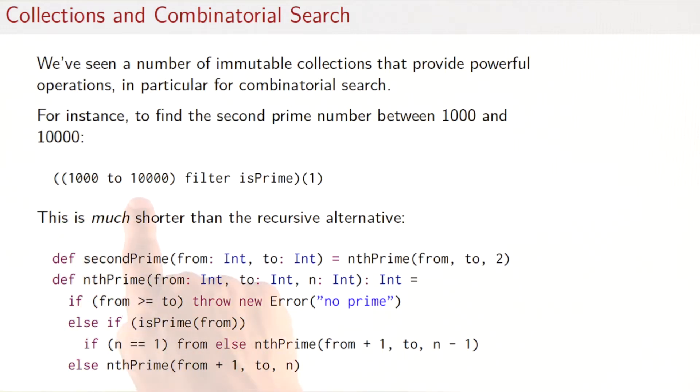Go from 1000 to 10,000, filter with the isPrime predicate, take the second element.